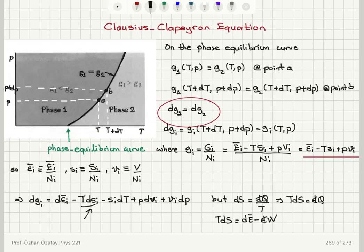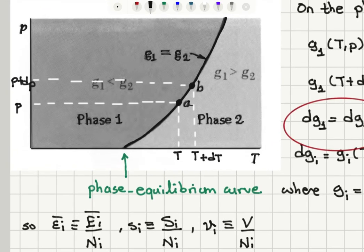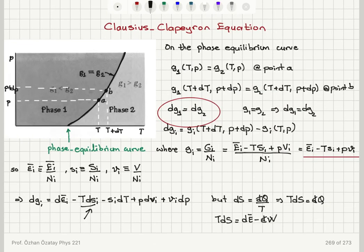In summary, the phase equilibrium curve is the set of pressure-temperature pairs such that the Gibbs free energy per molecule of phase 1 and phase 2 are equal. Along this curve, since G1 = G2, it automatically follows that dG1 = dG2 when going from point A at (T, P) to point B at (T+dT, P+dP). The Gibbs free energy per molecule equals mean energy per molecule minus temperature times entropy per molecule plus pressure times volume per molecule.